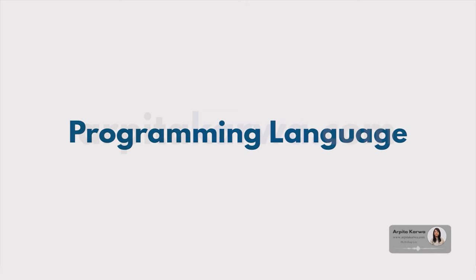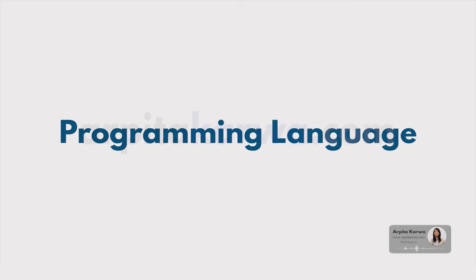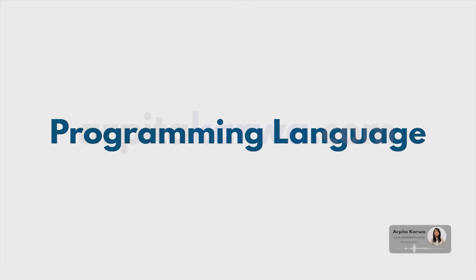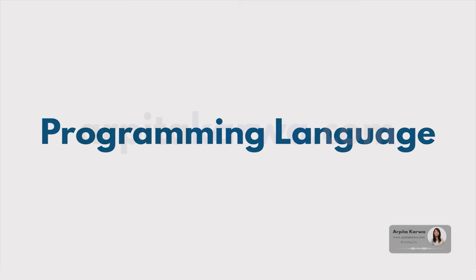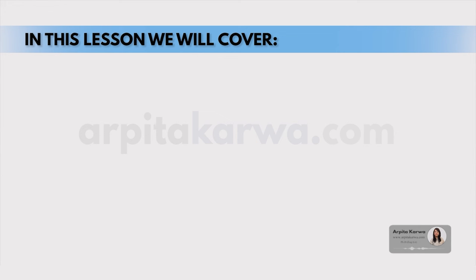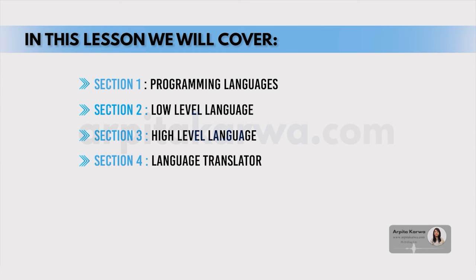Friends, in the last lecture we studied hardware and software. In the software section, we talked about operating system, system softwares and system utilities. Now today we are going to talk about programming languages and the types of programming languages like low level language, medium level language and high level language. So let's begin.